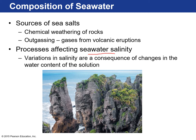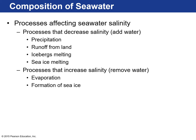Those variations are consequences of changes in the water content of that environment. The processes that decrease seawater salinity include precipitation — rain or snow — any runoff of fresh water from land into the ocean, and icebergs melting, which delivers more fresh water to the ocean, lowering salinity.